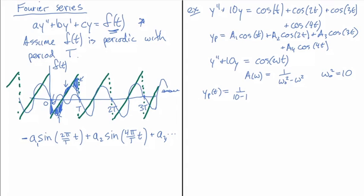10 minus 1 squared times cosine of t plus 1 over 10 minus 2 squared, 3 squared is 9 times cosine of 3t plus 1 over 10 minus 16, or 4 squared is 16 cosine of 4t.